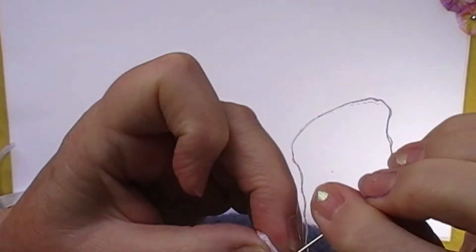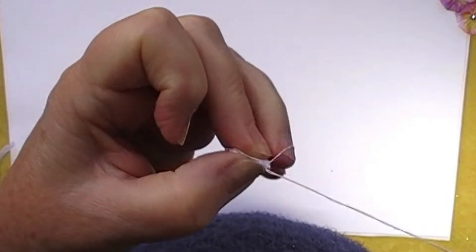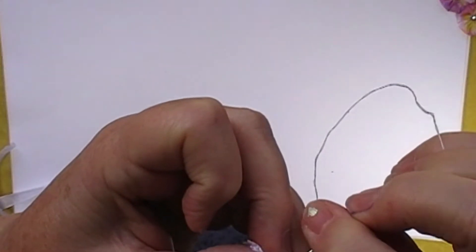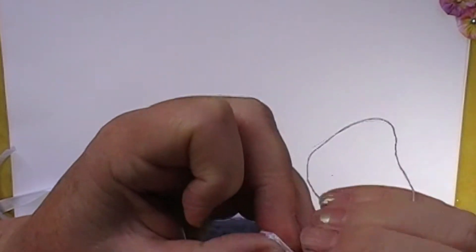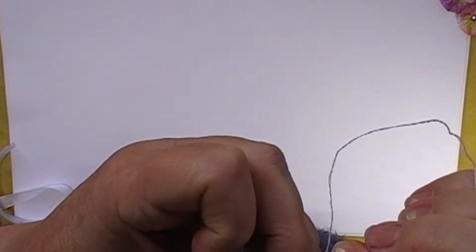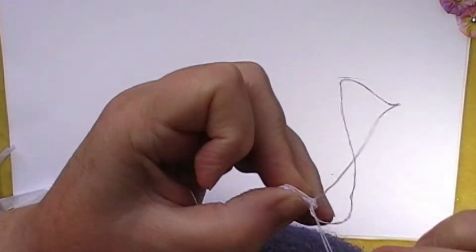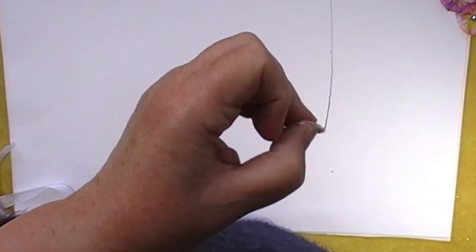When you've pulled it tight, do a couple of small stitches again just to anchor it so it won't come undone. And then when you've done that you can cut off the thread.